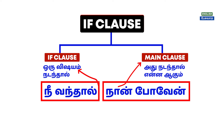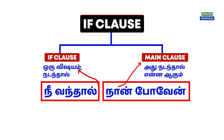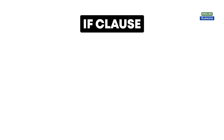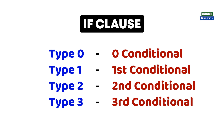What do we know now? The first thing is the if clause, and the second is the main clause. The if clause ends with a condition. Now we can see the types in this class — here we have 4 types.